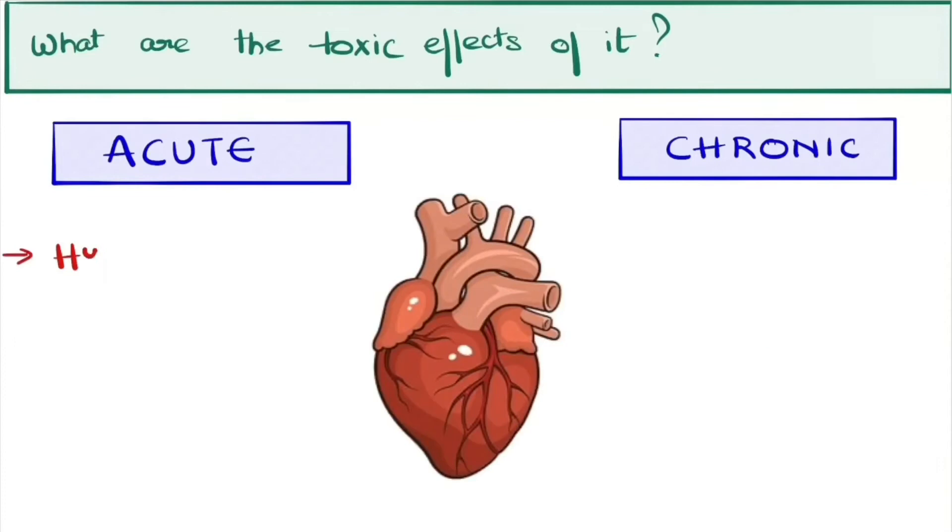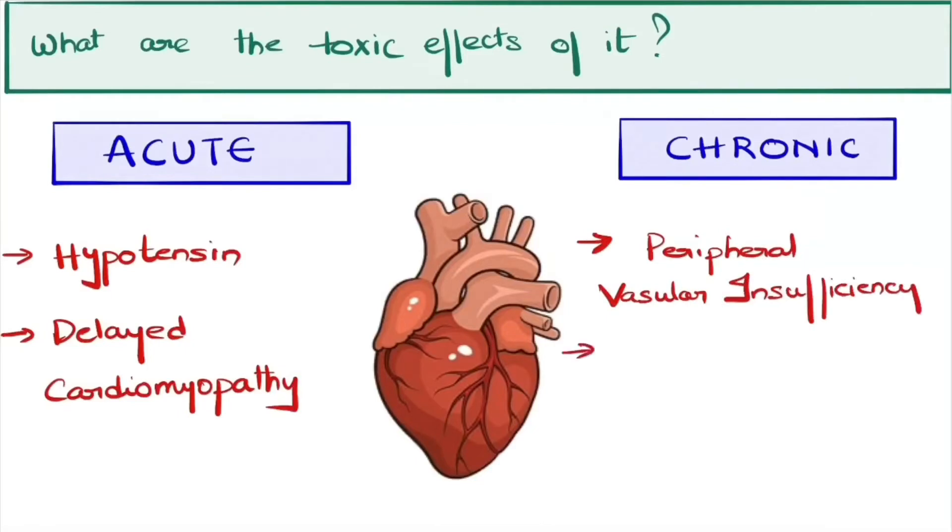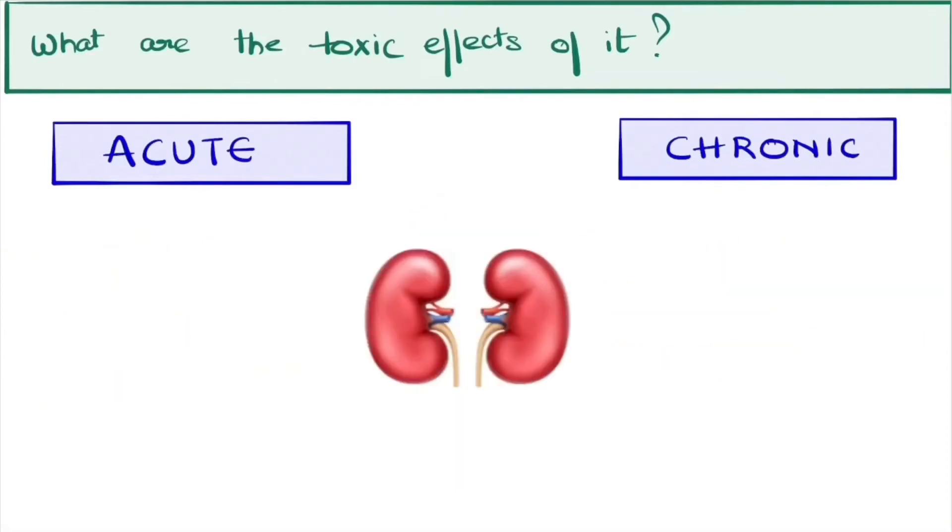On the heart, in acute cases, it causes hypotension and delayed cardiomyopathy. In chronic cases, causes peripheral vascular insufficiency and vasospasm. In kidneys, in acute cases, causes tubular necrosis and hemolysis, and in chronic cases leads to cancer.